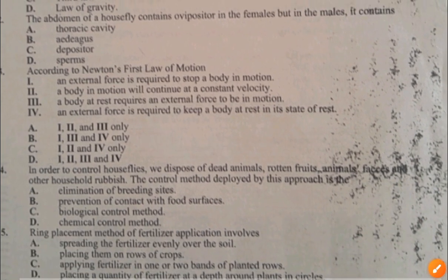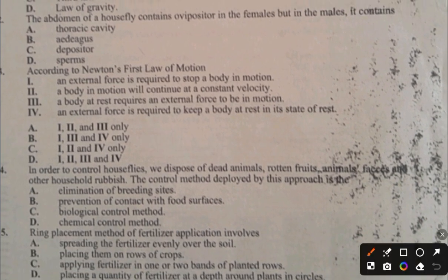Question 5. Ring placement method of fertilizer application involves: A. Spreading the fertilizer evenly over the soil, B. Placing them on rows of crops, C. Applying fertilizer in one or two bands of planted rows, D. Placing a quantity of fertilizer at a depth around plants in circles. The answer to question 5 is D, the ring placement — we place it in circles.